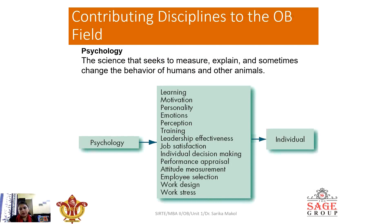The first is the psychological field. The science that seeks to measure, explain and sometimes change the behavior of humans and other animals is known as psychology. It relates to our mind and our mental health. Psychology basically helps in learning, motivation, personality, emotions, perceptional skills, training, leadership effectiveness, job satisfaction, individual decision making, performance appraisal, attitude, employee selection, work design, and work stress. All these activities are related to an individual, because learning skills can be improved on an individual basis first, and only then reflected in the group.